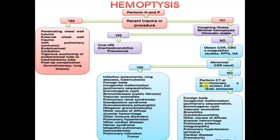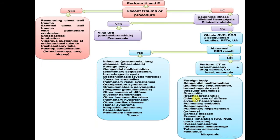If the chest x-ray is normal, perform CT or bronchoscopy, drug screen, CO level, and ammonia. The differential diagnosis may then include foreign body, congenital malformation, pulmonary sequestration, bronchogenic cyst, vascular anomaly, bronchitis, tracheobronchitis, other causes of diffuse alveolar hemorrhage, pulmonary embolus, coagulopathy, pulmonary hypertension, cardiac disease, prematurity, toxic inhalation (CO, NO2, crack cocaine), hyperhomocysteinemia, intracranial hemorrhage, tuberous sclerosis, factitious, or idiopathic.